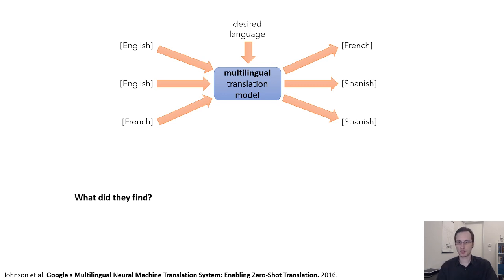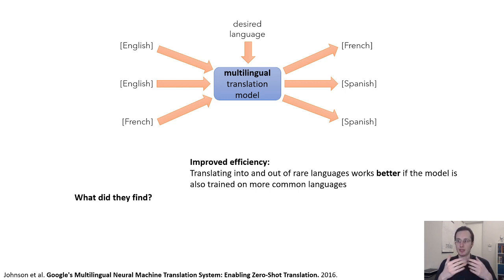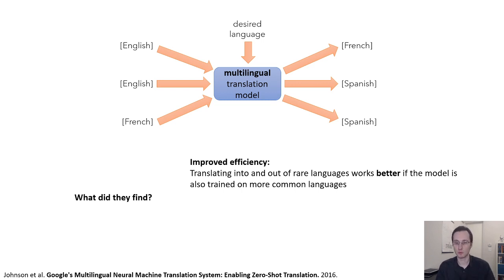So what did these researchers find? One finding is that such an approach improves efficiency. Especially for translating into and out of low-resource languages, this approach works better than using a standard single-language model, and including more common languages made low-resource language translation better. If you have a low-resource Romance language that uses similar root words as Spanish and French, including lots of Spanish and French data also improves the quality of translation into and out of that low-resource language.